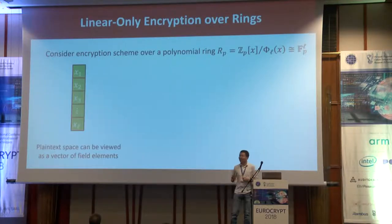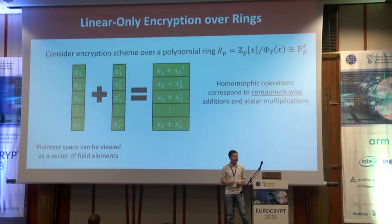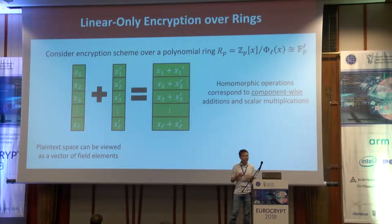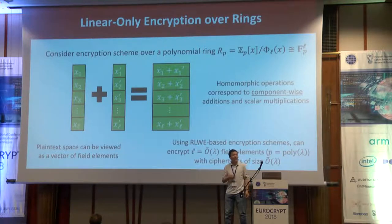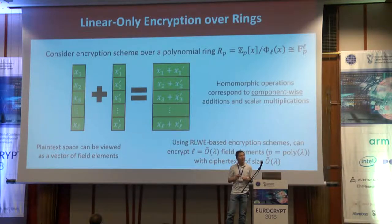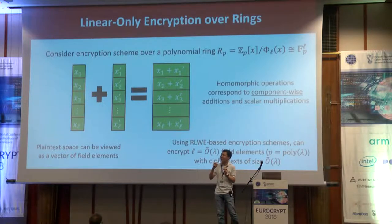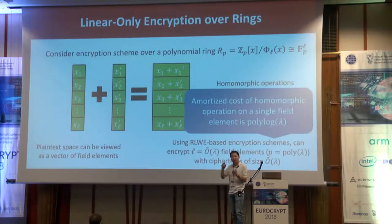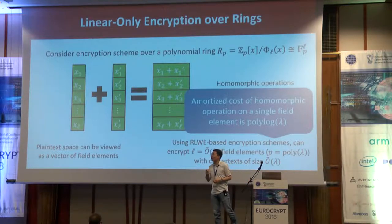Instead of encrypting one field element, we encrypt a vector of field elements. The homomorphic operations over this plaintext space correspond to addition and scalar multiplications of an entire vector of field elements at a time. We can instantiate these kinds of linear-only encryption schemes using encryption schemes based on ring learning with errors (ring-LWE). The nice property is that we can encrypt an entire vector containing λ field elements in a single ciphertext that is also roughly order λ in size. Effectively, when we perform homomorphic operations over these packed ciphertexts, we pay only polylogarithmic overhead per every elementary field operation.